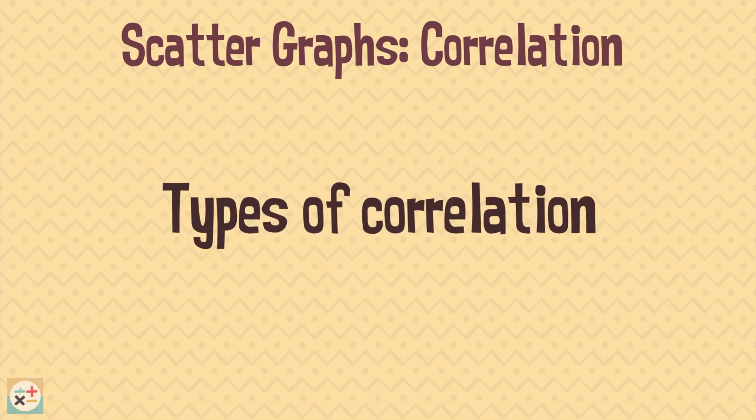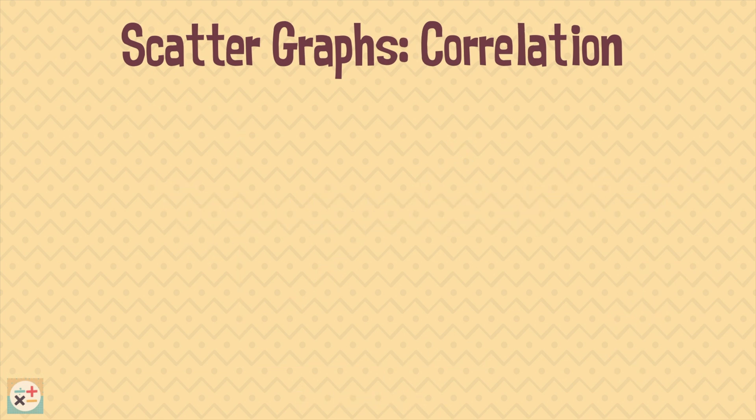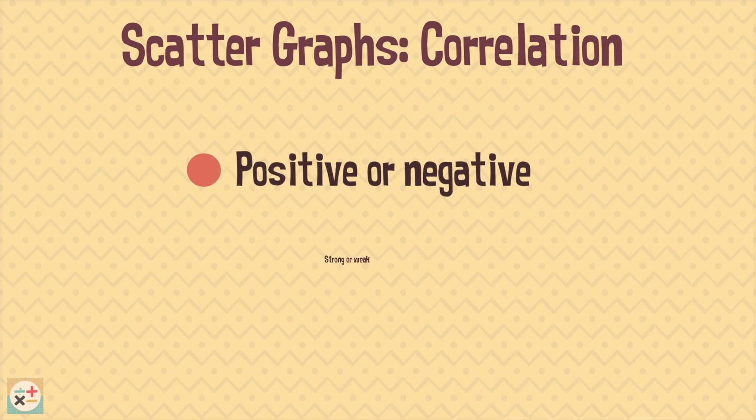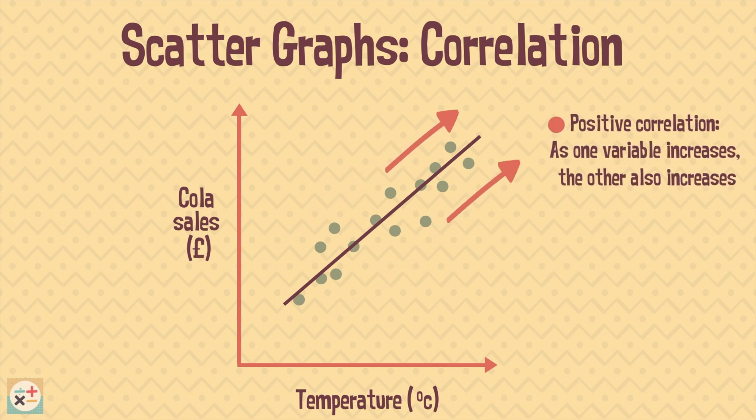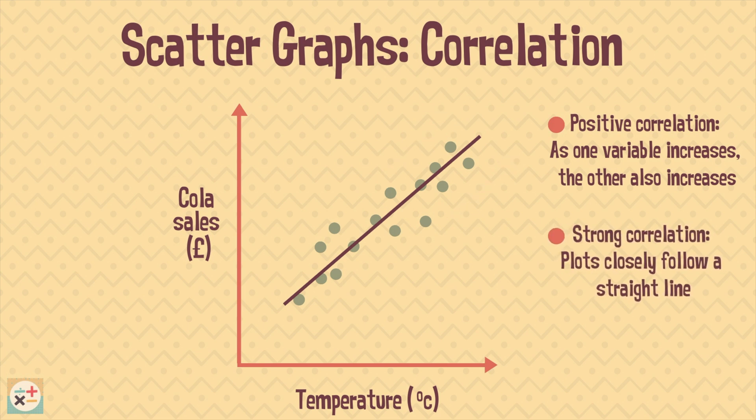There are different types of correlation: positive or negative and strong or weak. Let's have a look at positive correlations. Here is the same cola sales example. This scatter graph shows that there is a positive correlation because cola sales increase as the temperature increases. Both variables increase. We can also say that this is a strong correlation as the plots closely follow the line of best fit.